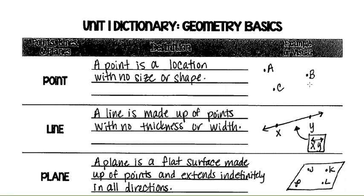Point: a point is a location with no size or shape. This is a point, this is a point, this is a point — they're just reference points of locations.